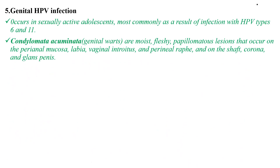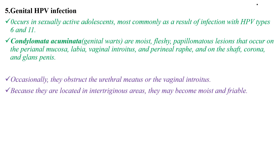Genital human papillomavirus infection, called condyloma acuminata, occurs in sexually active adolescents, most commonly as a result of infection with HPV type 6 and 11. They are moist, fleshy papillomatous lesions that occur on the perianal mucosa, labia, vaginal introitus, perianal raphe, and on the shaft, corona, and glans penis. Occasionally they obstruct the urethral meatus or vaginal introitus. Because they are located in intertriginous areas, they may become moist and friable.